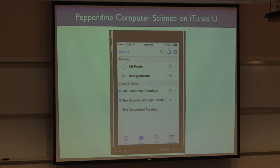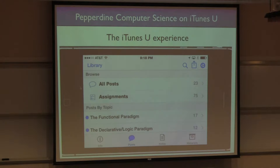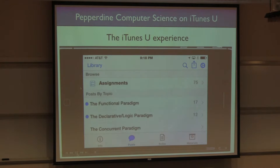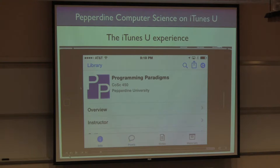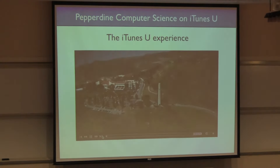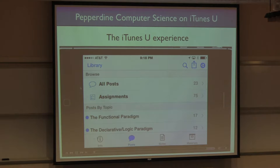The user clicked on the icons at the bottom. You see these icons: Info, Posts, Notes, and Materials. So the user clicked on Posts. Now we're going to go to a landscape view, and the user is scrolling through the posts. The way iTunes courses are organized — you have these four items that you can look at: Info, Posts, Notes, and Materials.